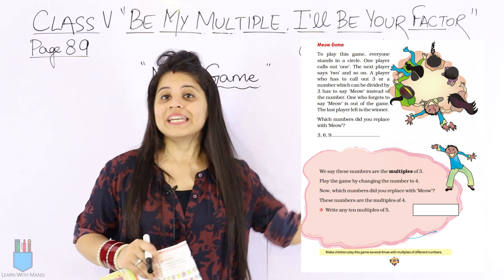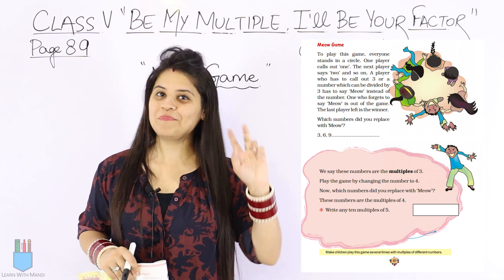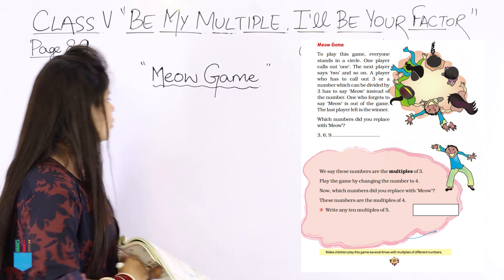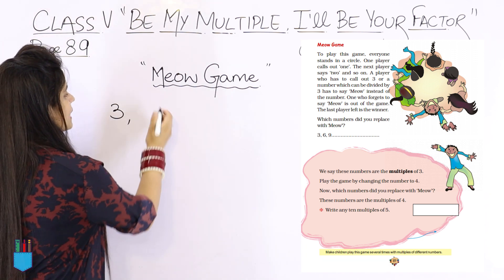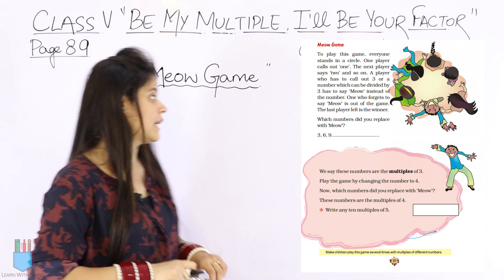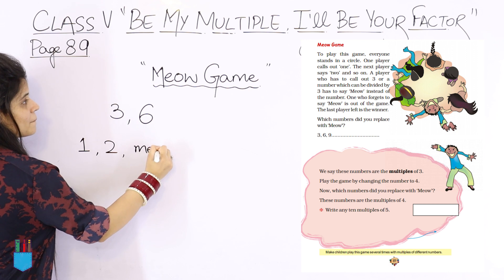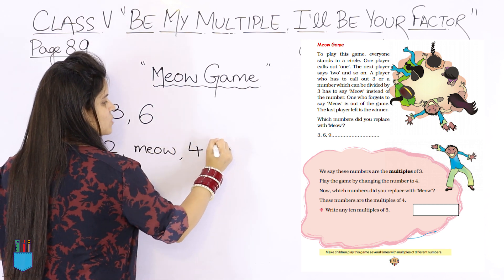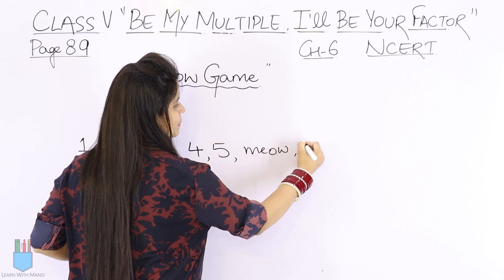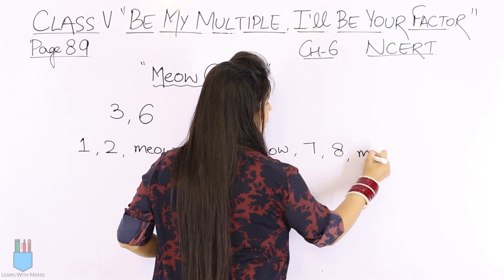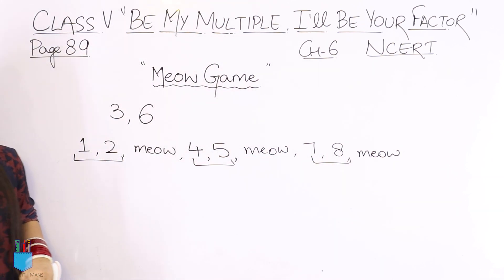So for example: I say 1, the next person says 2. Now the next person doesn't say 3 — he says Meow. The number 3 is divided by 3. The next number divided by 3 is 6. After that, players continue: 4, 5, Meow, 7, 8, and then again Meow. So the simple concept is that after every two numbers, Meow is said, because after two numbers the next number is divisible by 3.